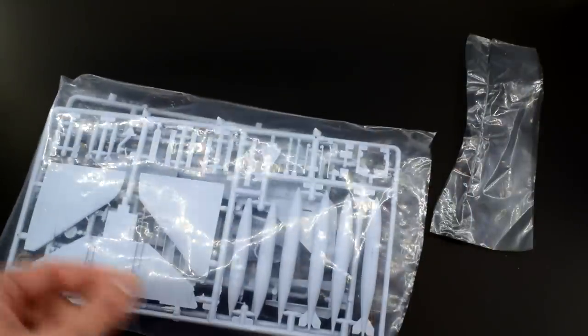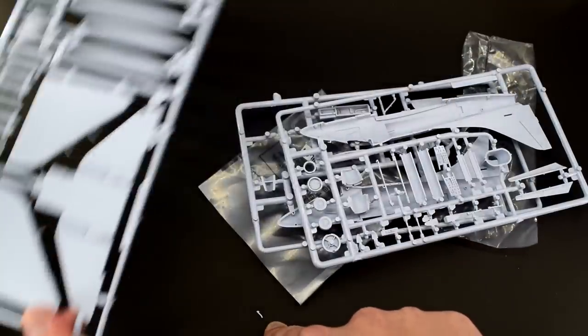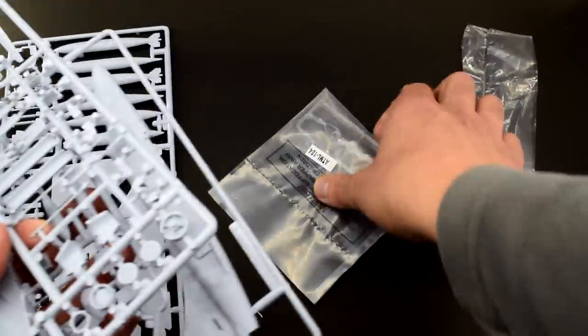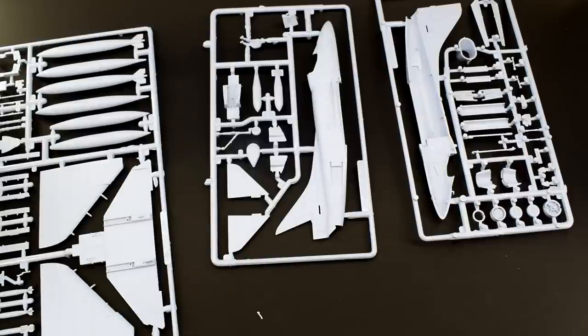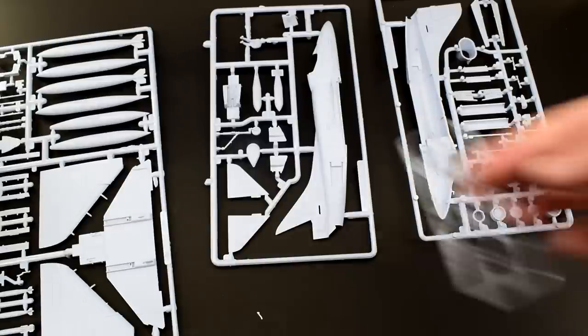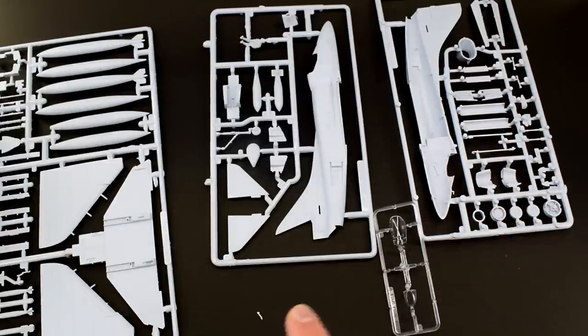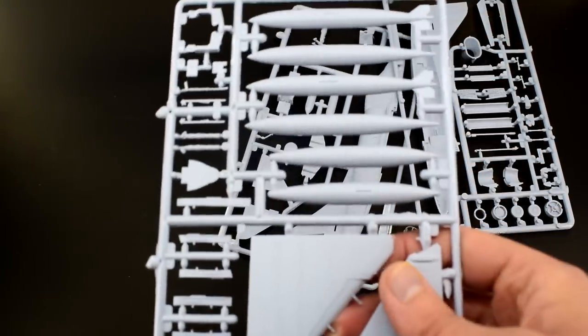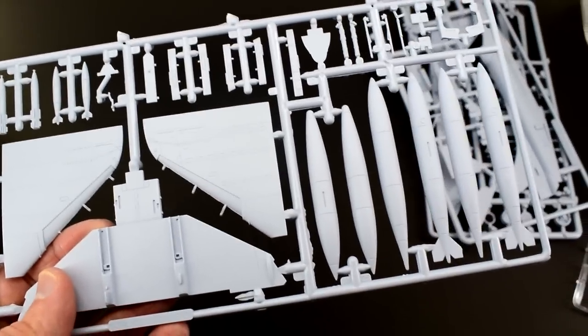Here is the bag of all the plastic bits. Right well something's instantly fallen off there. Not sure what that is but I'm sure we'll figure it out. Three grey sprues and one small clear one. Let's see if I can figure out where that's come from. It looks like a control column. Not sure what that bit is.